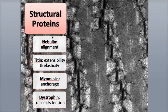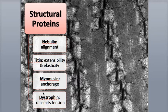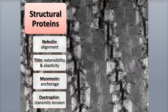Nebulin is a structural protein that is wrapped around the entire thin filament, and helps connect the thin filaments to the Z-discs. Dystrophin connects the thin filaments to the integral membrane proteins in the muscle fiber's sarcolemma, which is the plasma membrane around the muscle fiber. Dystrophin helps support the sarcolemma, and can transmit tension produced by the sarcomeres during contraction to the tendons.